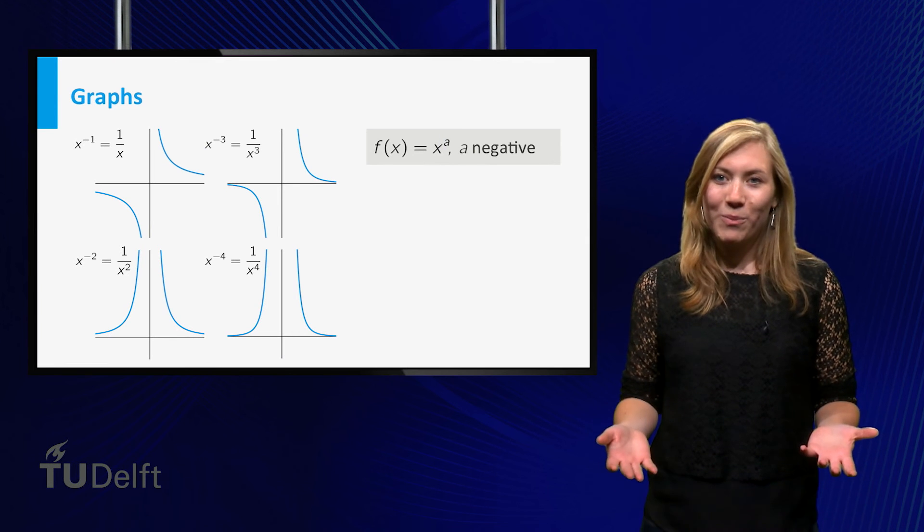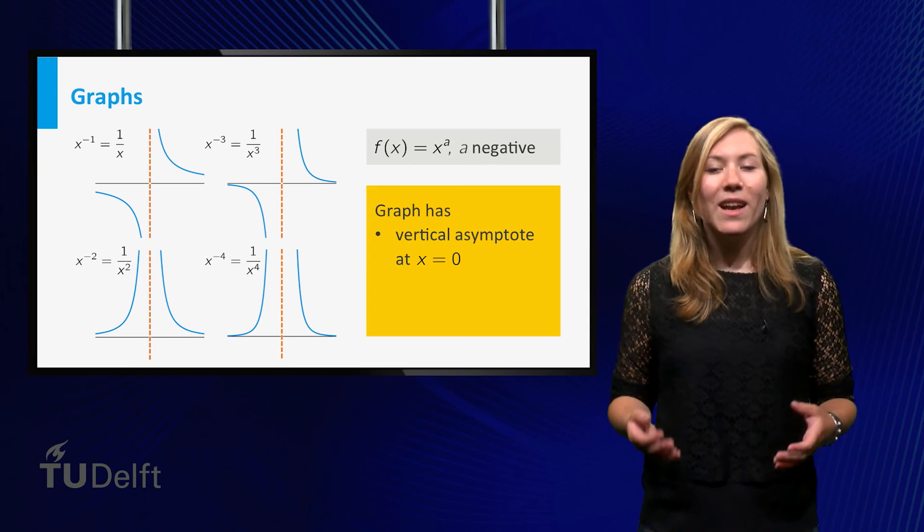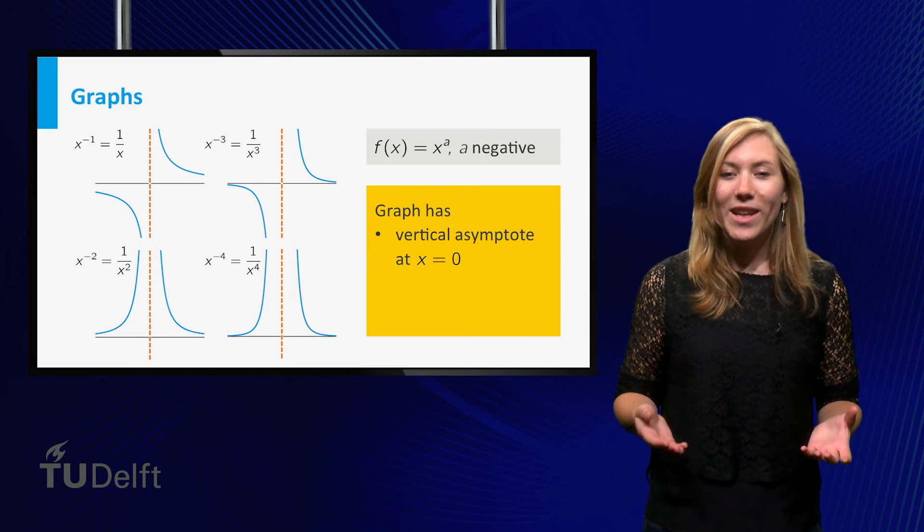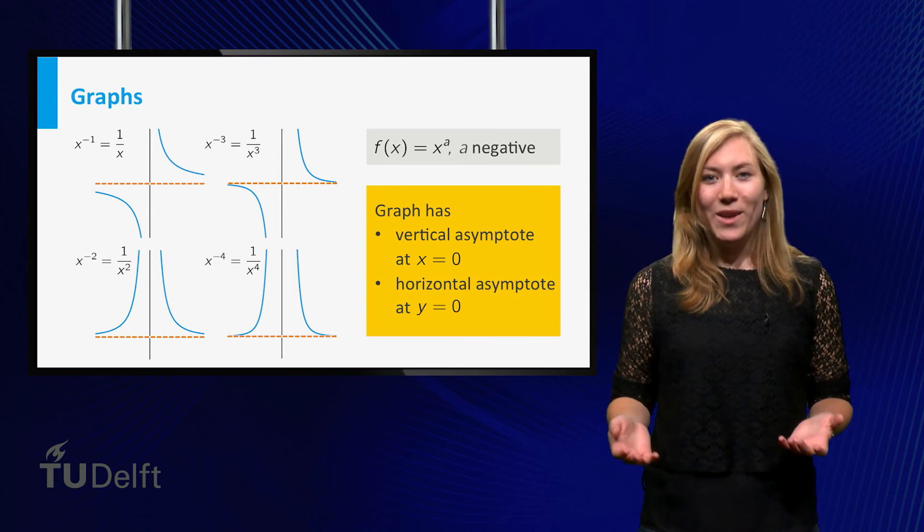All these graphs have a horizontal and a vertical asymptote. In general, the following holds. If a is negative, the graph of x to the power a has a vertical asymptote at x equal to 0, and a horizontal asymptote at y equal to 0.